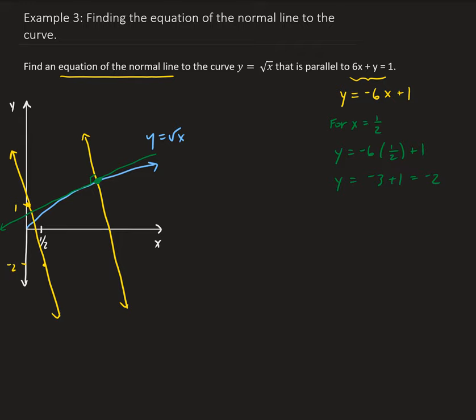So now we can use the fact that we know the slope of the line given. Since the normal line that we're trying to find is parallel to the line given, that means they have the same slope. So the slope of the normal line is going to be minus 6, because it's parallel to the line that we're given.